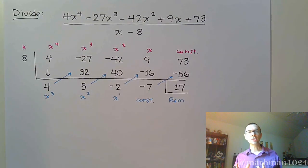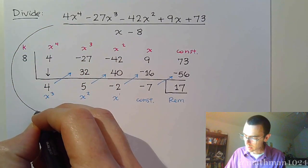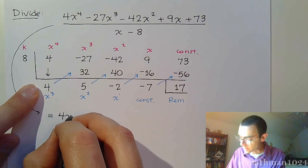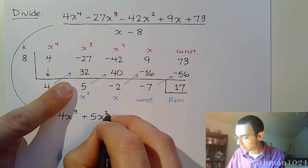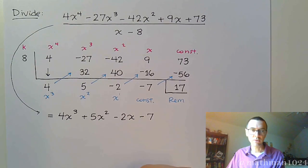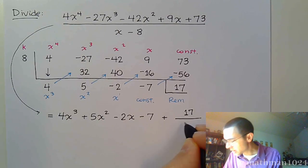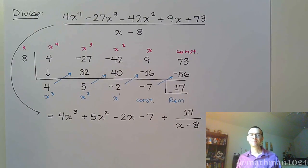So now we take these numbers and we write this as our answer. So 4x to the 3rd plus 5x squared minus 2x minus 7 plus, we take the remainder, which is 17, over the divisor x minus 8. And that's really it.